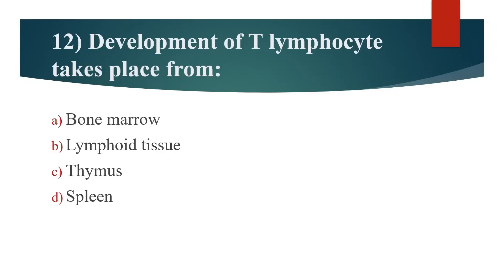12th question: Development of T lymphocyte takes place from? Option A: Bone marrow. Option B: Lymphoid tissue. Option C: Thymus. Option D: Spleen. Answer is Option C: Thymus.